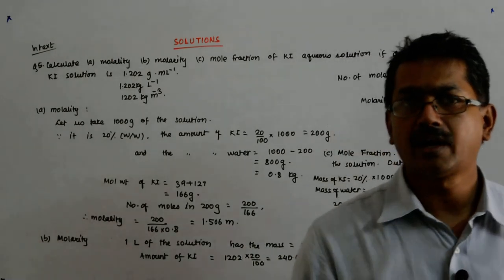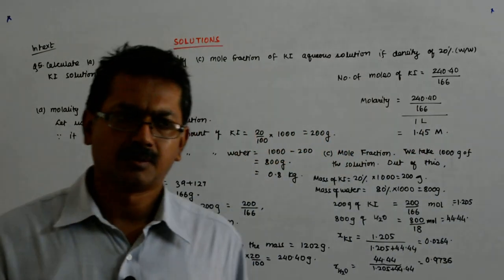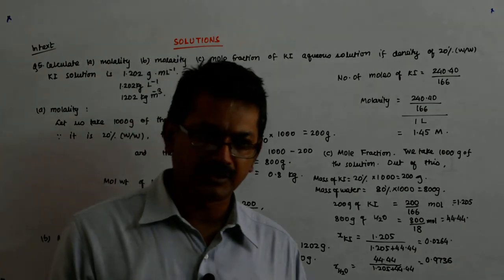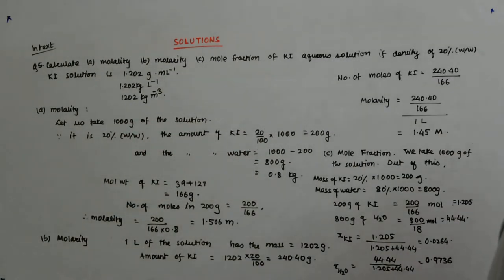No unit. Why? Because it is number of moles upon number of moles. Number of moles itself has no unit. It is only a number. So this is what we get.